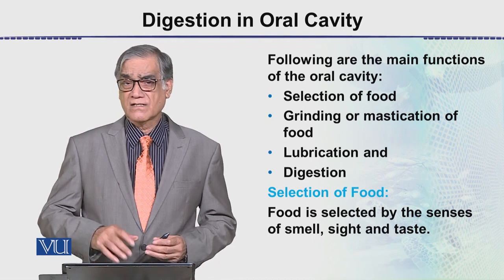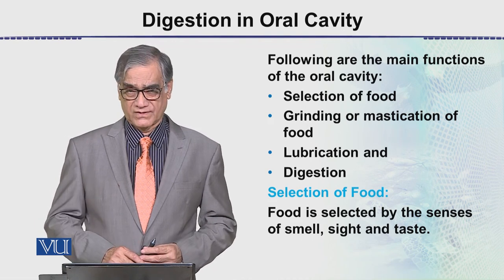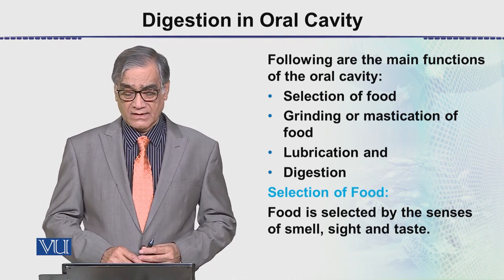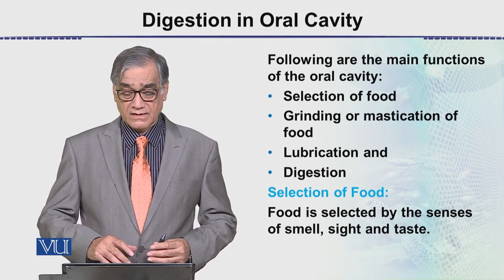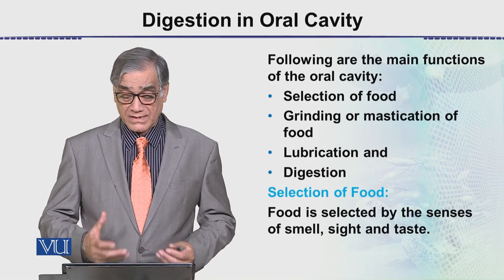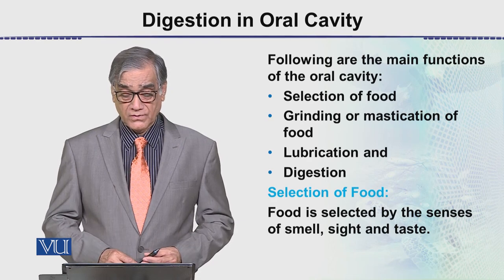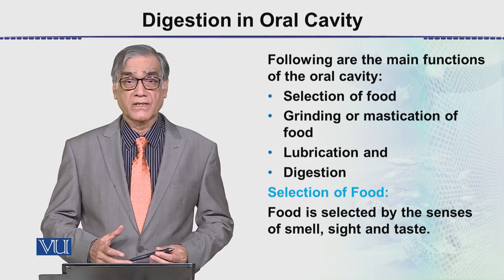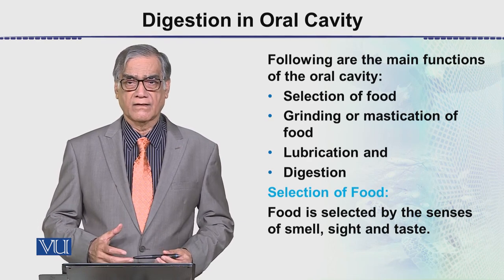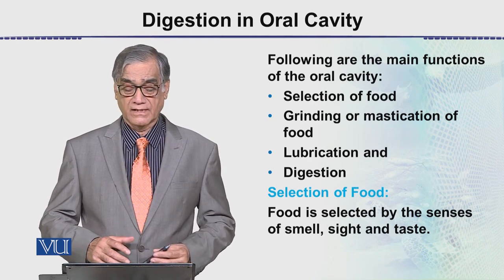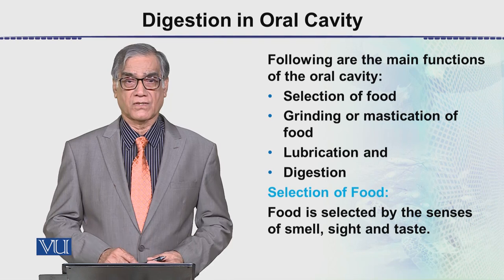First, there is selection of food. Then there is grinding or mastication of food. Then there is lubrication, and lastly the digestion process.